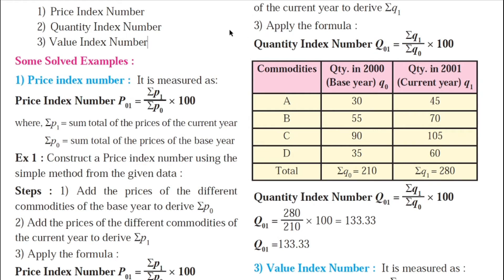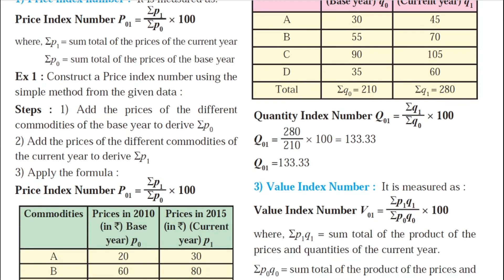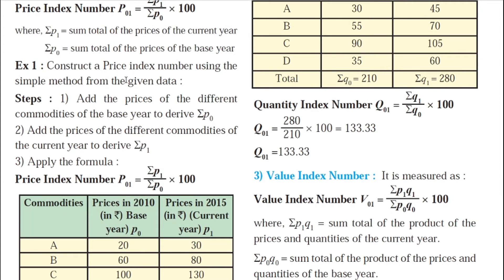For the price index number, the formula is P01 = (ΣP1 / ΣP0) × 100. The suffix 0 is for the base year and suffix 1 is for the current year. So ΣP1 is the sum total of prices of the current year, whereas ΣP0 is the sum total of prices of the base year. Let us look at a simple sum: construct a price index number using the simple method from the given data.